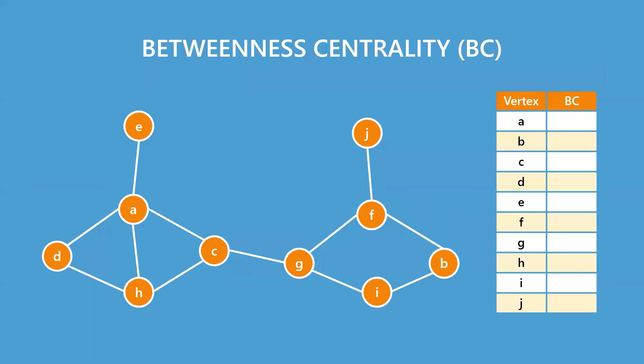Betweenness centrality measures how much a vertex is situated between other vertices. For example, in order for D to reach F, it has to go through C. Therefore, C is said to be between D and F.